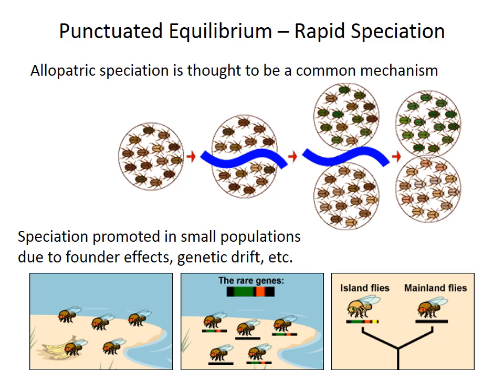Allopatric speciation is thought to be a pretty common mechanism — it's the evolution of species in physically separated populations. Some sort of barrier forms to separate two groups of the original species. Because those two groups may have somewhat different genetic material due to random sorting during the split, and they may also face different environments and selective pressures, they can evolve in different directions. With no gene flow between them, after sufficient time they may diverge enough that they can no longer interbreed and become different species. That divergence can happen pretty quickly — probably a few hundred to a few thousand years — and is helped along if one of the isolated populations is small, making it more likely to over-represent particular rare genes, an effect called the founder effect.